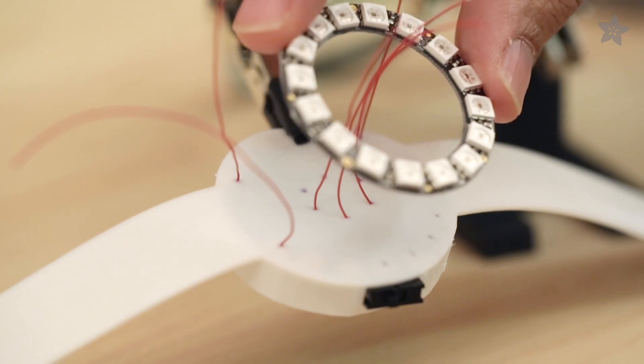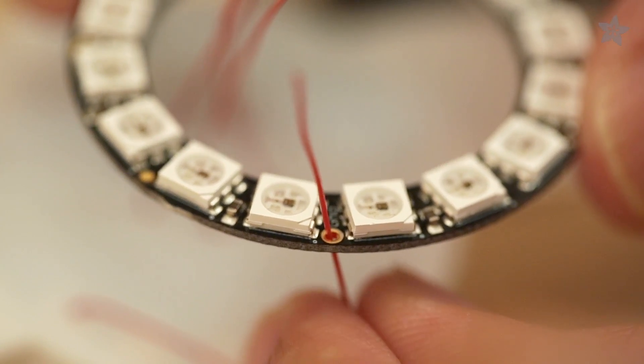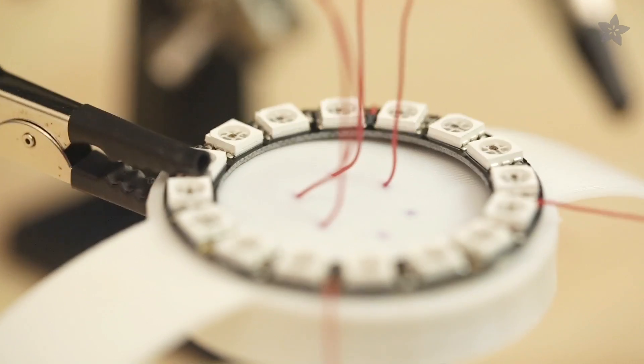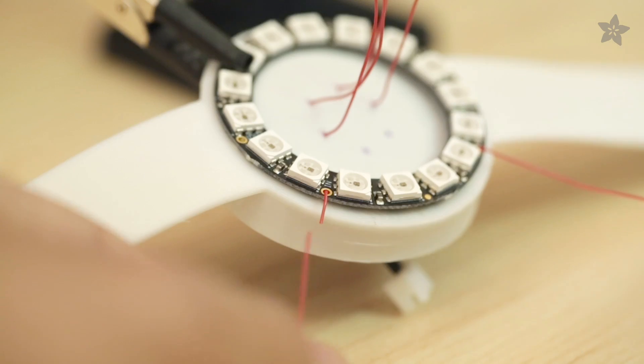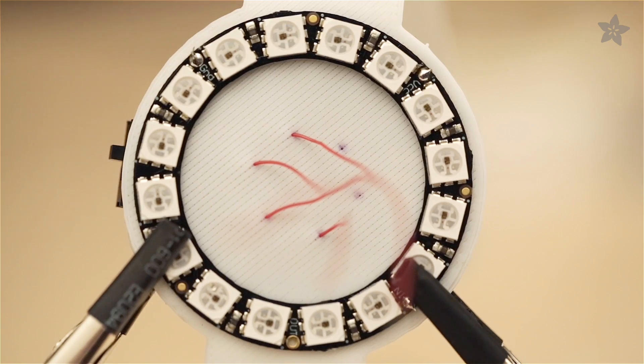Position the NeoPixel ring over the wires of the accelerometer and thread the appropriate wires to the pins. Double check the circuit diagram if you're not sure. Bend down the wires to secure the NeoPixel ring. Cut the wires short and strip and solder them.